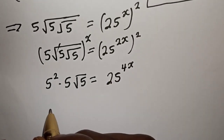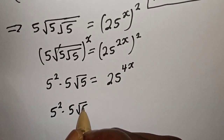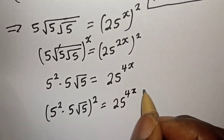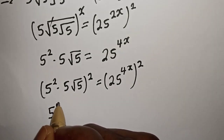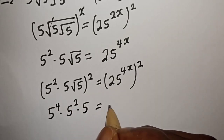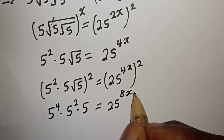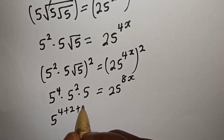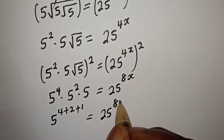Also, let's square both sides of this equation. We have 5, square root of 5, square root of 5, square root of 5, all squared, is equal to 25 raised to power 4x squared. Then this is 5 raised to the power 4, multiplied by 5 squared, multiplied by 5, is equal to 25 raised to the power 4x multiplied by 2 — that is 8x. Then this is 5 raised to the power 4 plus 2 plus 1, is equal to 25 raised to the power 8x.